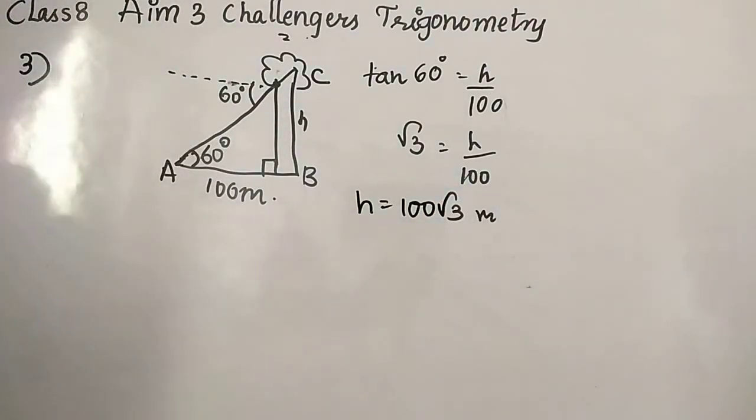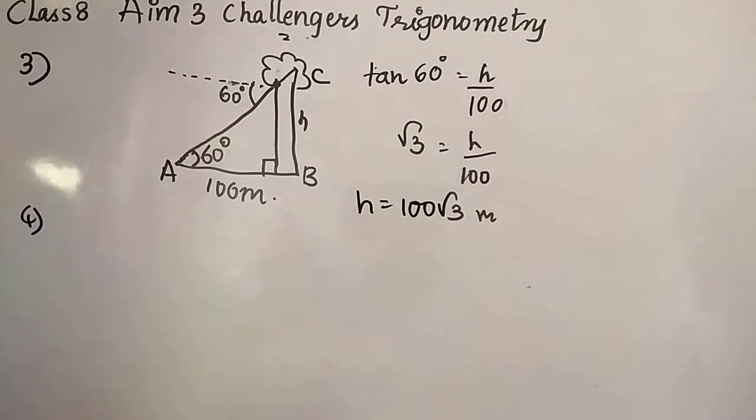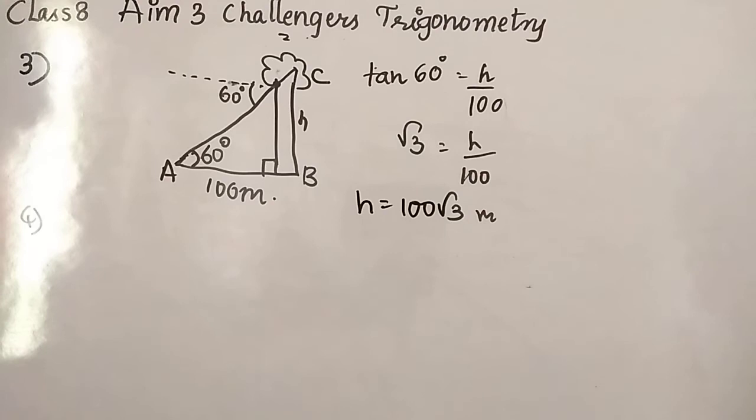Now we will see the 4th one. I can say 4th one is the easiest question ever they have given in full challenges, I can say. So the question is draw the diagram of following situation. A person flying a kite at an angle of elevation and length of thread from his hand to kite is L.